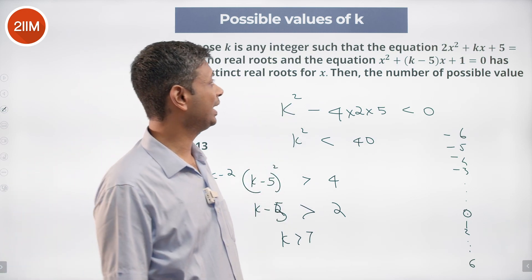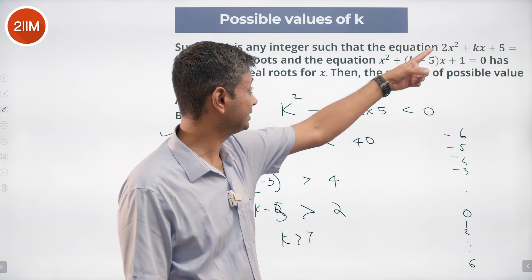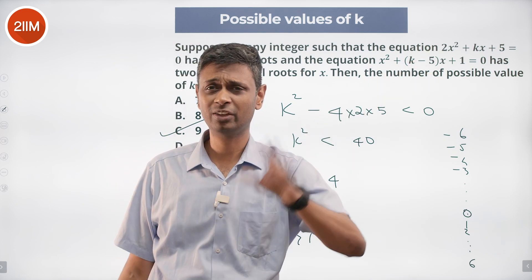Discriminant less than 0. Discriminant greater than 0. Simplify, we are through.